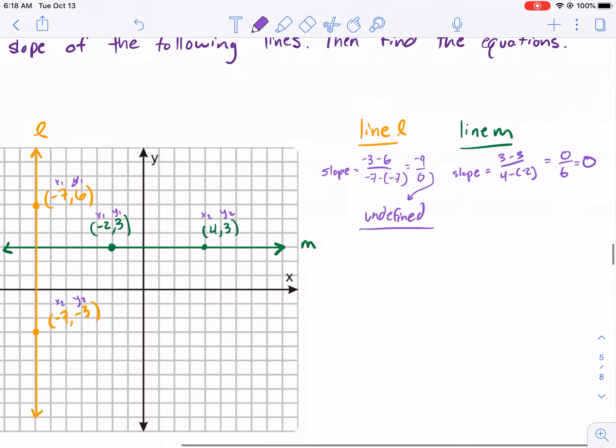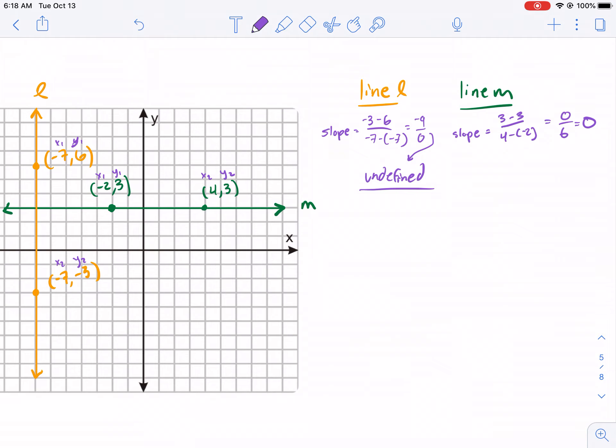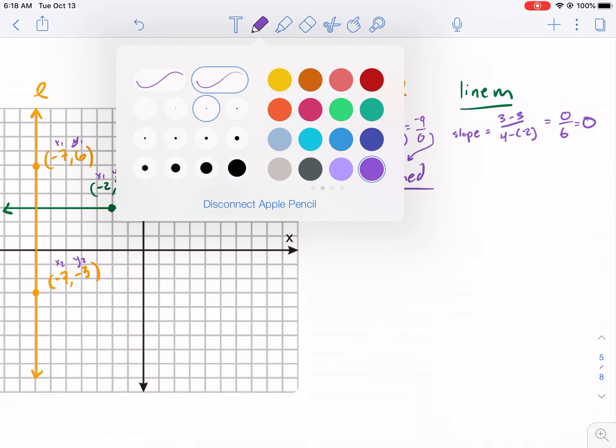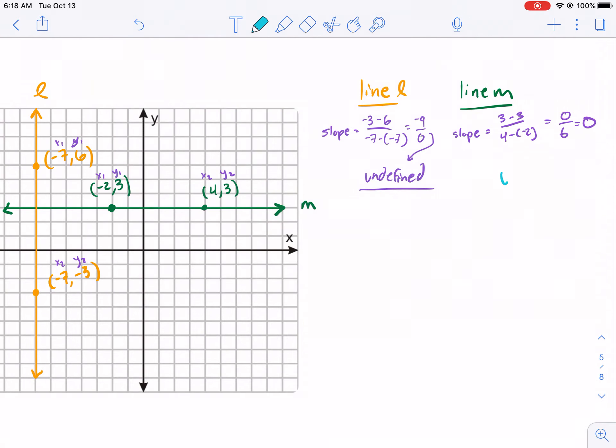Anytime we have a slope of 0, the line is simply going to be Y equals a number. So, in this case, we have Y equals... And here we look, where's our clues? Y equals 3 for both these points. This point right here, the Y intercept is (0, 3). This point right here, it looks like (8, 3). Notice that 3 is always constant for this. This is everywhere that Y equals 3. The X value changes, but the Y stays the same. So, our equation equals Y equals 3.